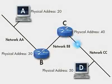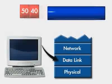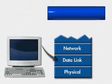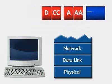The packet travels to Computer D, where it is received, and the data link layer addresses are removed. The original source and destination addresses are contained within the packet at the network layer.